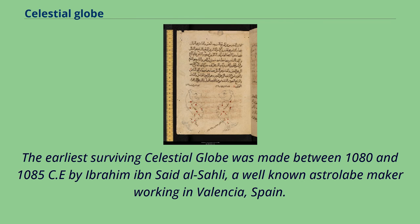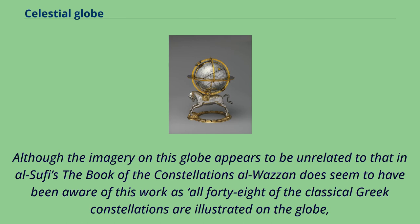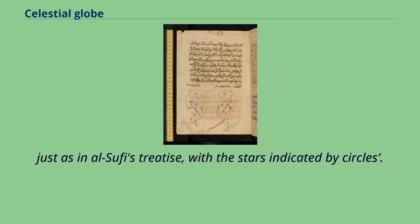The earliest surviving celestial globe was made between 1080 and 1085 CE by Ibrahim Ibn Said al-Sali, a well-known astrolabe-maker working in Valencia, Spain. Although the imagery on this globe appears to be unrelated to that in al-Sufi's Book of the Constellations, the maker seems to have been aware of this work, as all 48 of the classical Greek constellations are illustrated on the globe, with the stars indicated by circles, just as in al-Sufi's treatise.